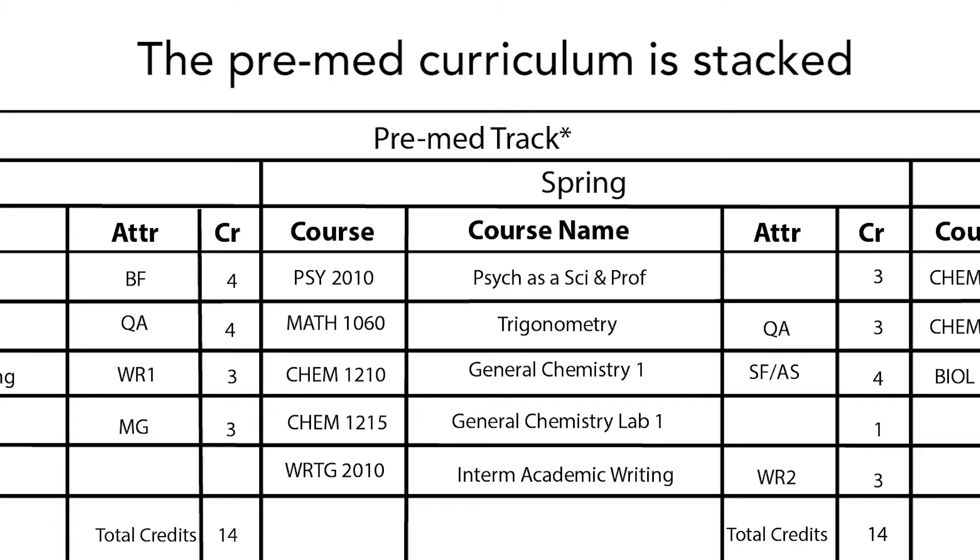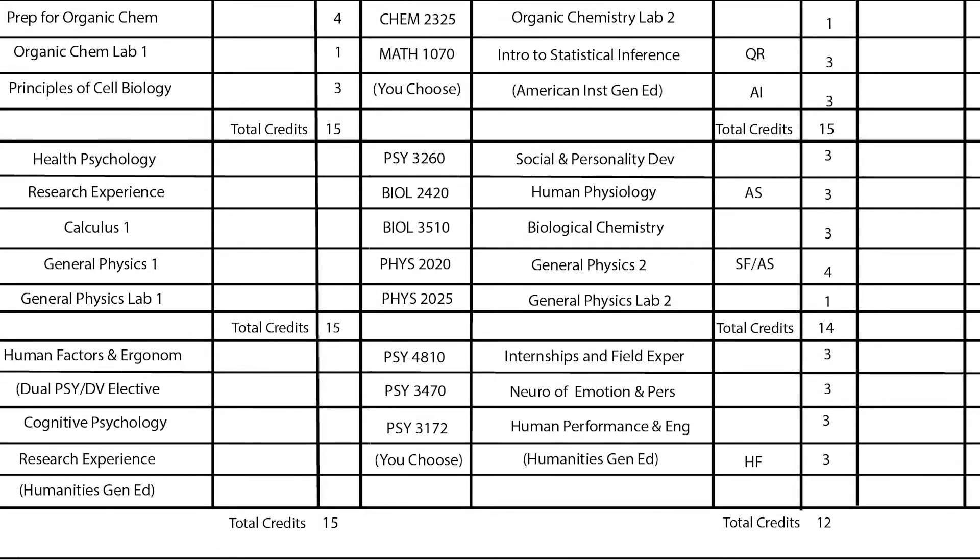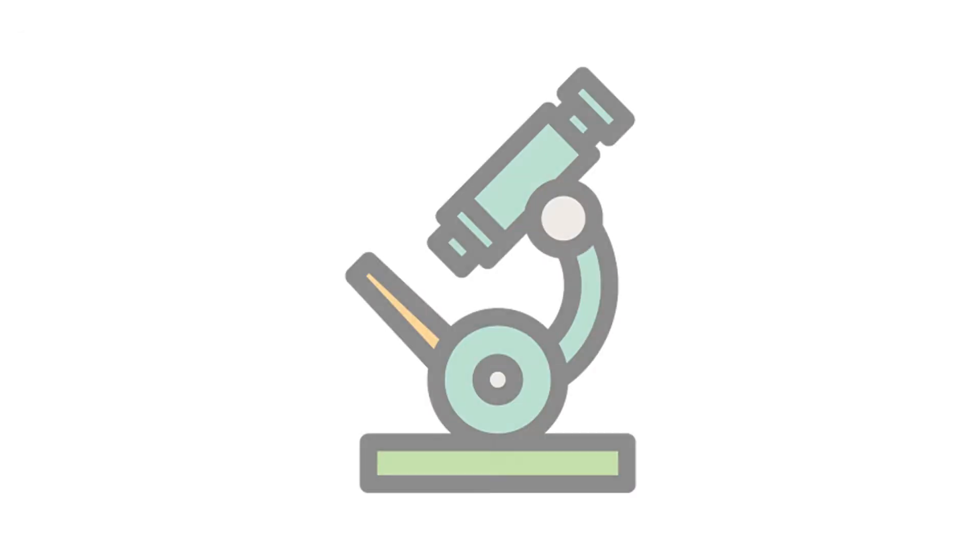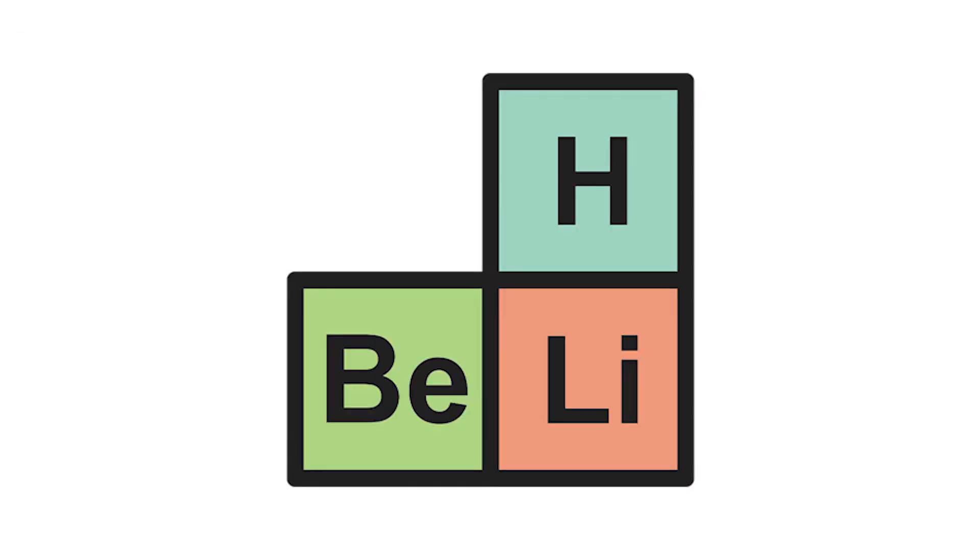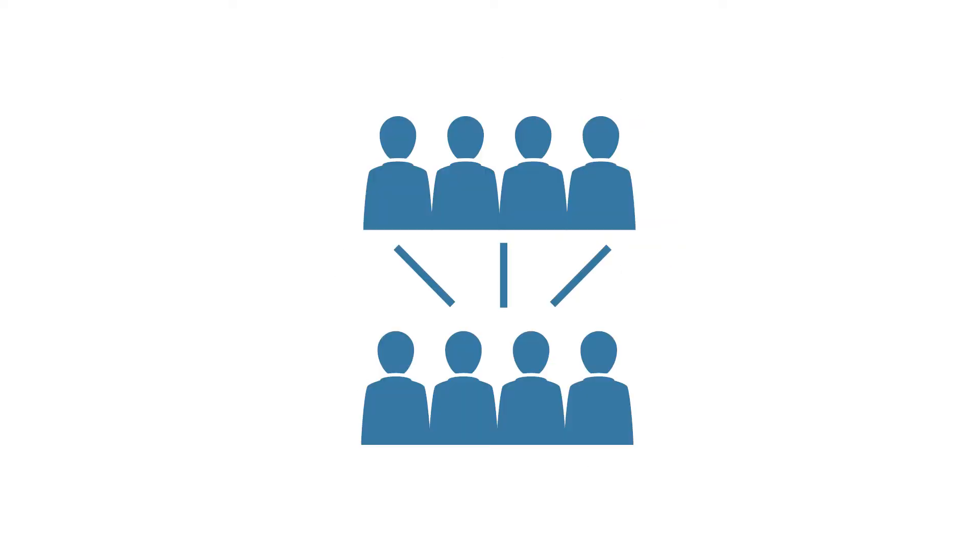But there are a few things to keep in mind. Number one, the pre-med curriculum is stacked and since the MCAT changed in 2015 it's actually gotten even more stacked. What I mean by that is you have to take biology, chemistry, inorganic chemistry, organic chemistry, physics, psychology, sociology, math, English, and maybe even biochemistry. That's almost 18 to 20 courses that any pre-med has to take, which can be up to 50 percent of the courses you take in college.